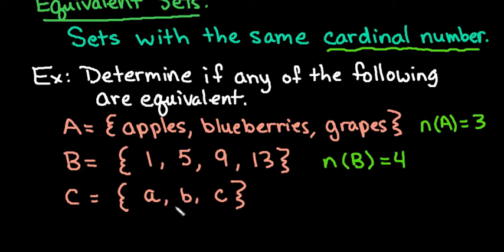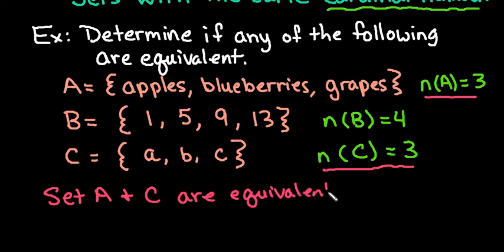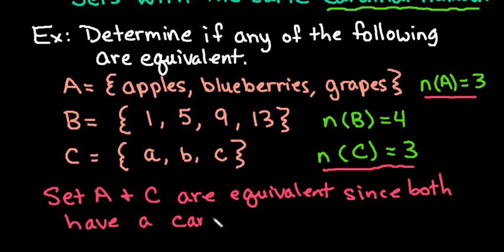Okay, and then the last one, C. Set C contains the letters A, B, and C. So the cardinal number of set C is equal to 3. So we can see that set A and set C have equal cardinal numbers. So we can say that set A and C are equivalent since both have a cardinal number of 3.